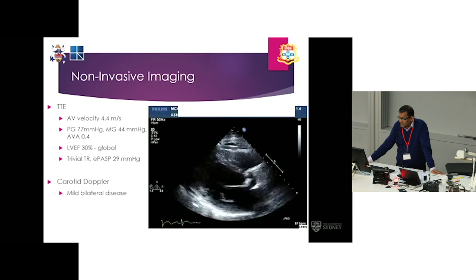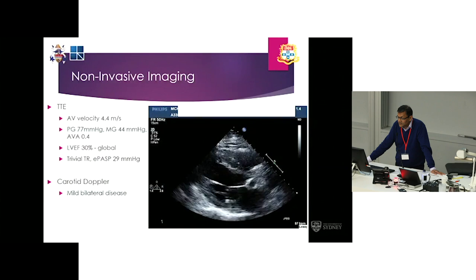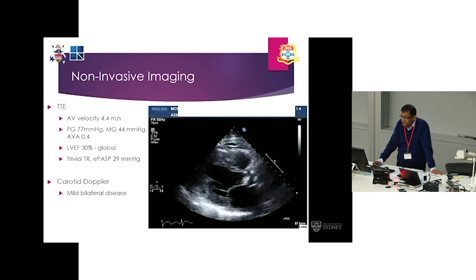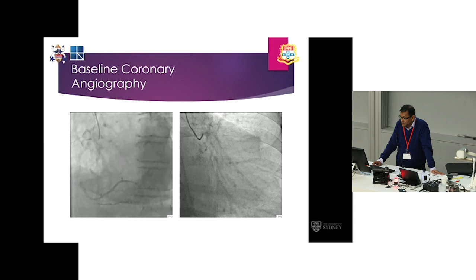A transthoracic echo confirms the presence of severe calcific aortic stenosis in the context of a depressed ejection fraction. Her carotid duplex scan showed just mild bilateral disease. Her coronary anatomy was essentially normal, just minor irregularities.